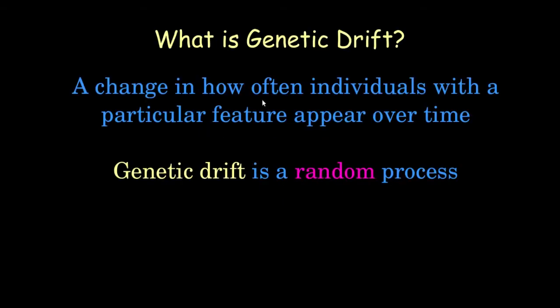Let's talk about genetic drift. First of all, what is genetic drift? Genetic drift is a change in how often individuals with a particular feature appear over time. It's a random process unless a particular feature has an advantage over another, which we'll see later.